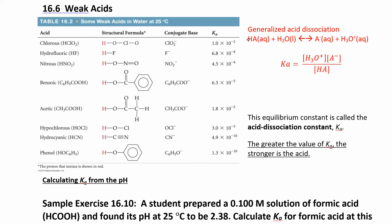The Ka tells you how many products you're going to make, or essentially how far to the right the reaction goes. The bigger Ka values are at the top and the smaller ones are at the bottom. You don't have to memorize any of these Ka values — this chart gives you the name, the structural formula, and what the conjugate base is going to be.